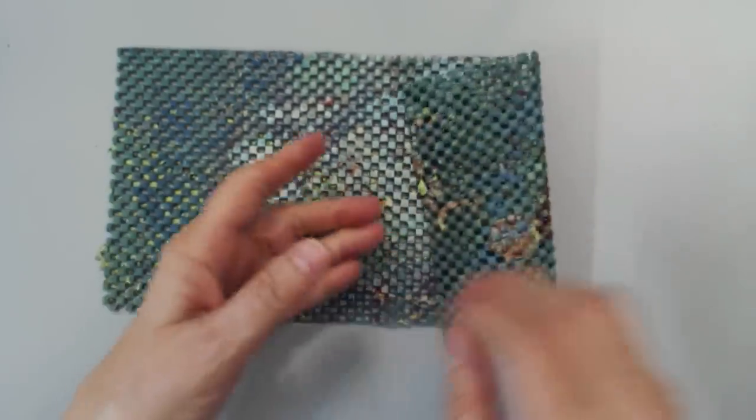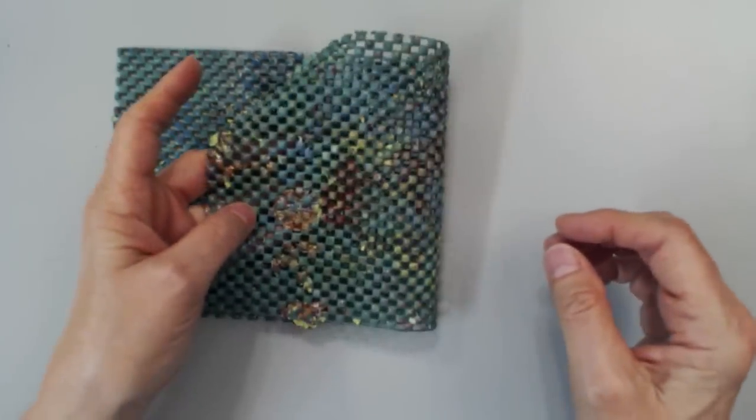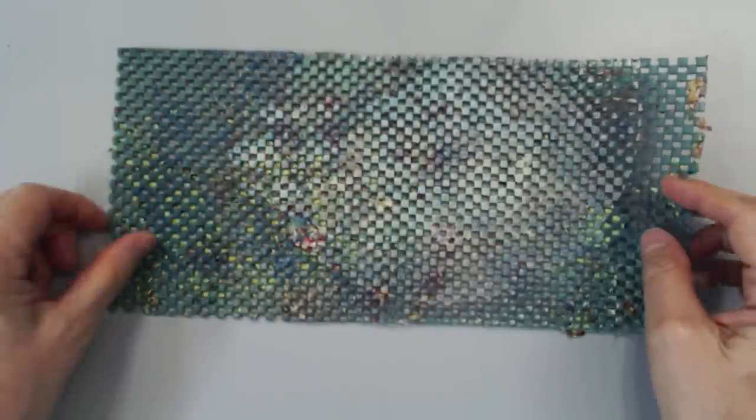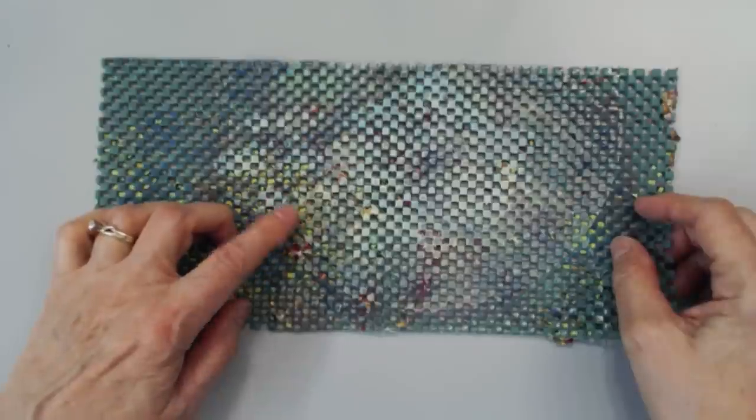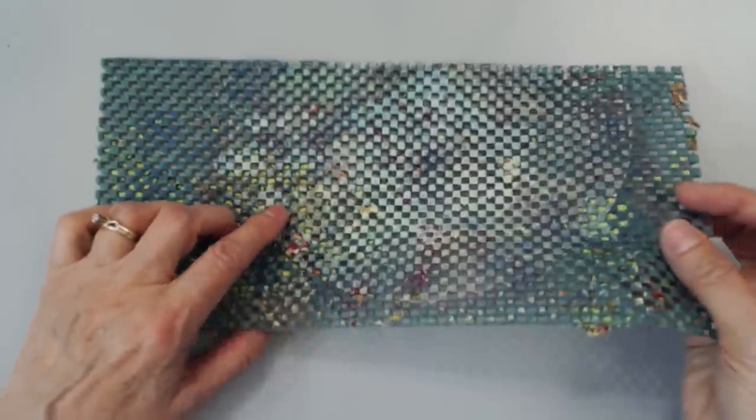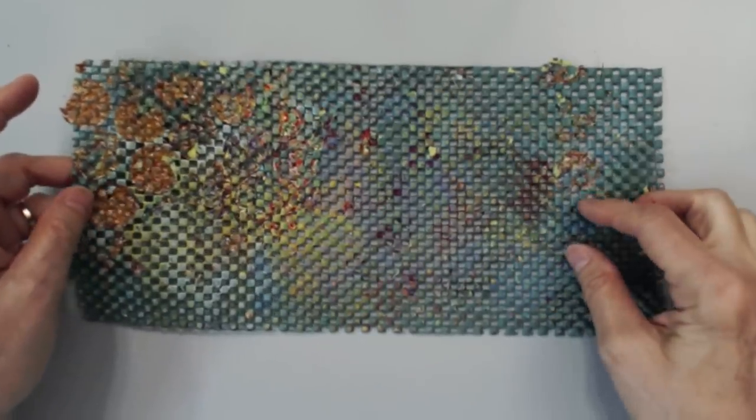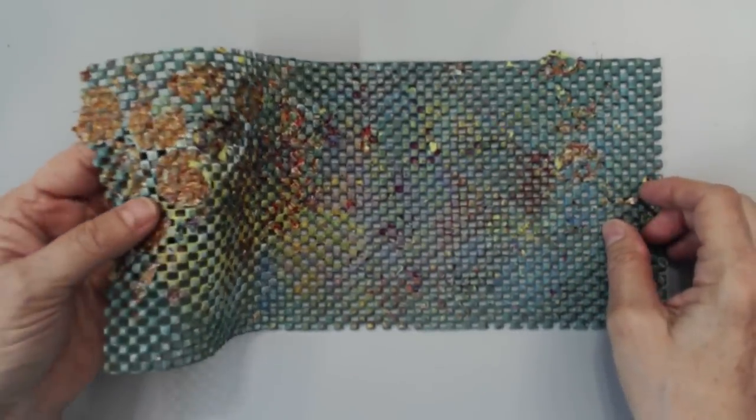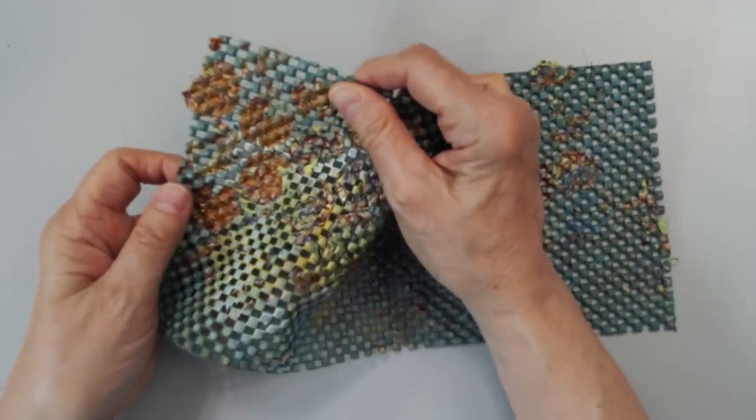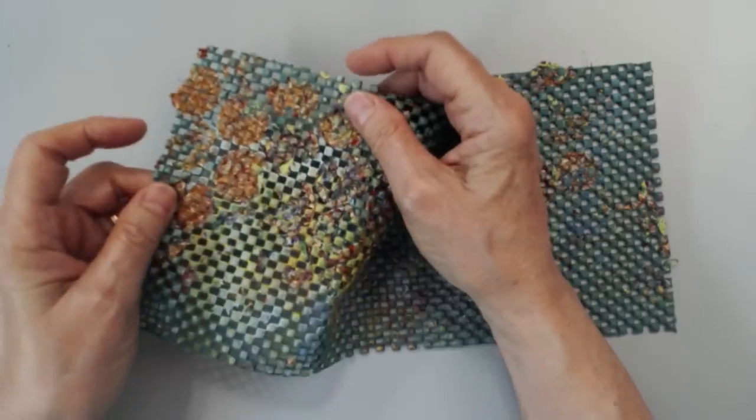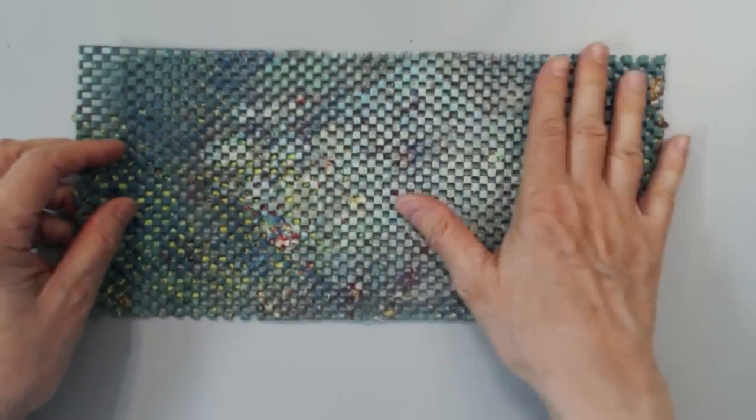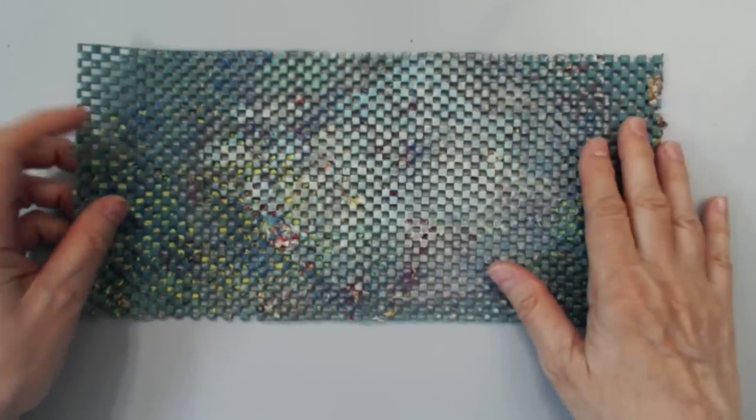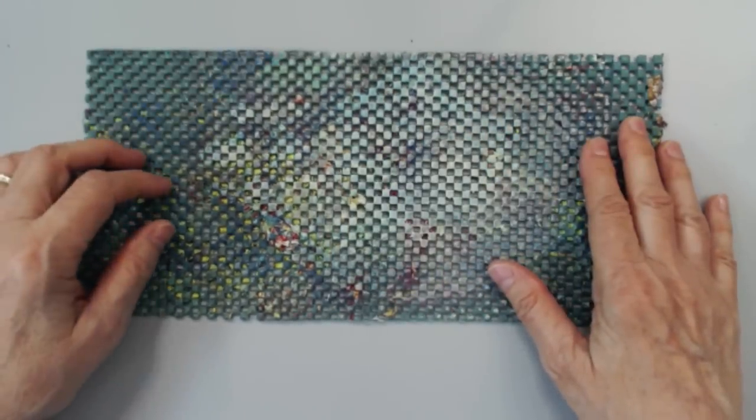And then this one, this piece is shelf liner. And it's to put in your cabinets so that your dishes don't slip around. And this one obviously needs to be soaked and cleaned because I've clogged up a bunch of the holes with paint. You can see over here, you can't even see through the material anymore. So this one needs a good cleaning. But this really does give you some great texture and more stencil options.